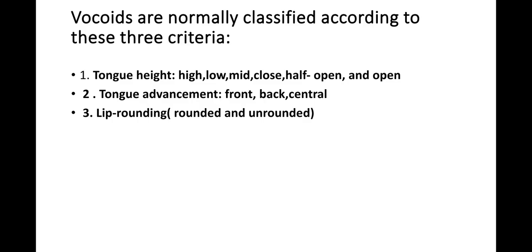Vowels are normally classified according to three criteria. Number one: height of the tongue — whether it is high, low, mid, close, half open, or completely open. Number two: tongue advancement — whether the tongue is at the front, back, or central position. Number three: lip rounding — whether the lips are rounded or unrounded. I hope it is easy for you.